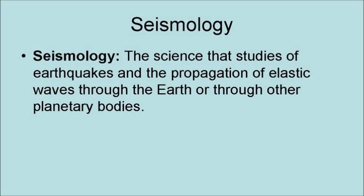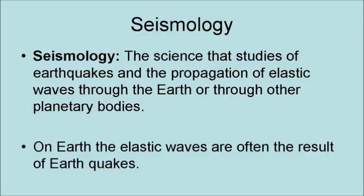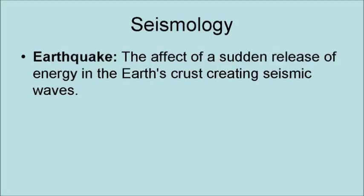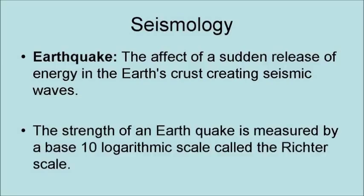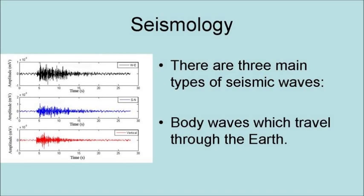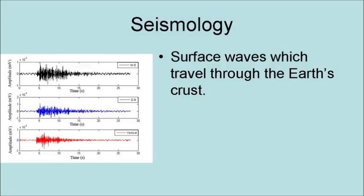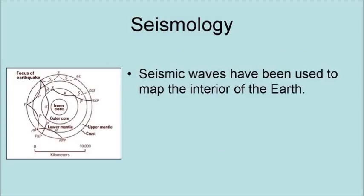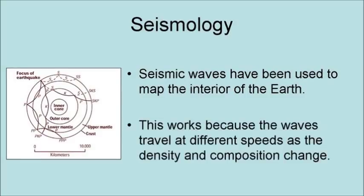Seismology is the science that studies earthquakes and the propagation of elastic waves through the Earth and other planetary bodies. On Earth, elastic waves are often the result of earthquakes — the effects of a sudden release of energy from the Earth's crust, creating seismic waves. The strength of an earthquake is measured by a base-10 logarithmic scale called the Richter scale. There are three main types of seismic waves: body waves, which travel through the Earth; surface waves, which travel through the Earth's crust; and normal modes that ring the Earth like a bell. Seismic waves have been used to map the interior of the Earth, because the waves travel at different speeds as the density and composition change.